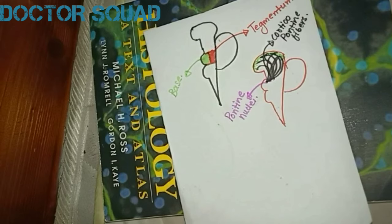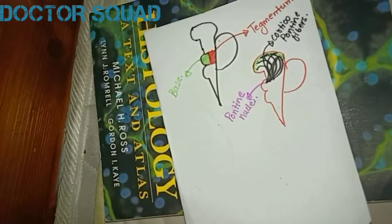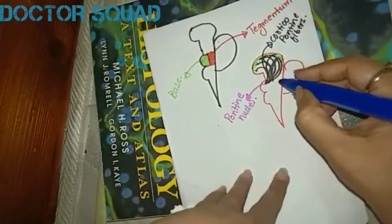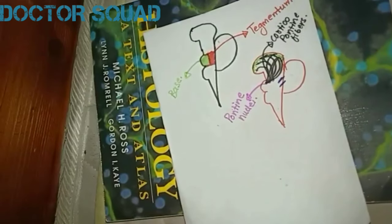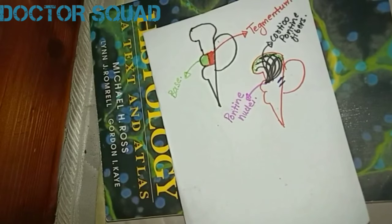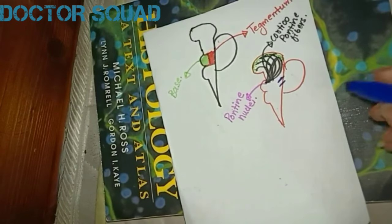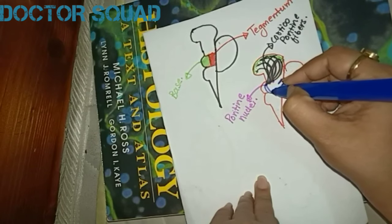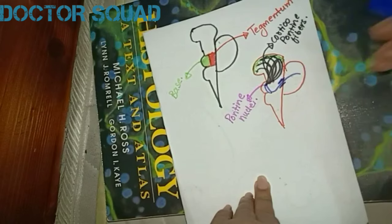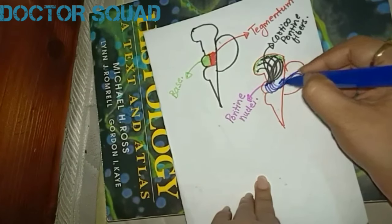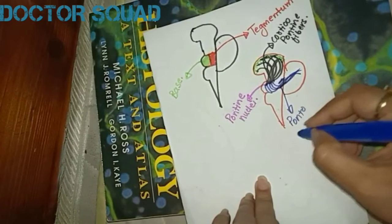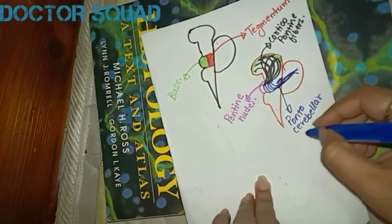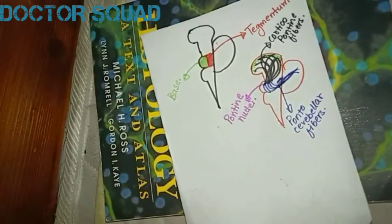There is another fiber known as the pontocerebellar fibers. Ponto refers to the pontine nucleus, and cerebellar refers to the cerebellum. These fibers start from the pontine nucleus, travel through the peduncle — the pedunculus cerebellaris medius — and go to the cerebellum. These fibers are known as pontocerebellar fibers.